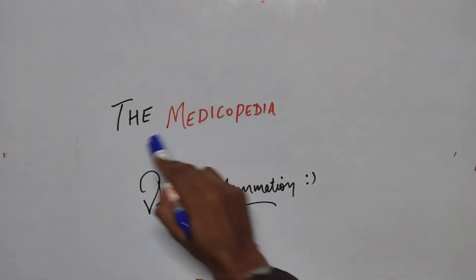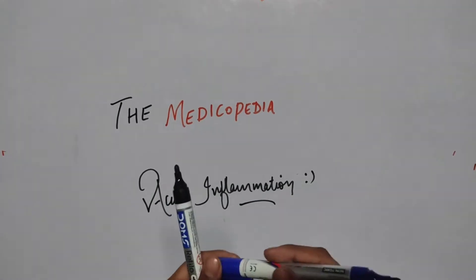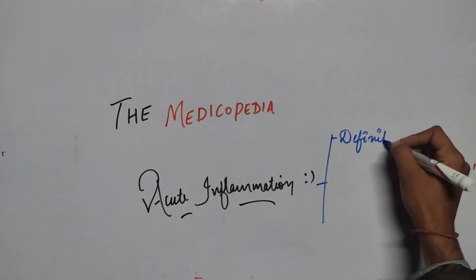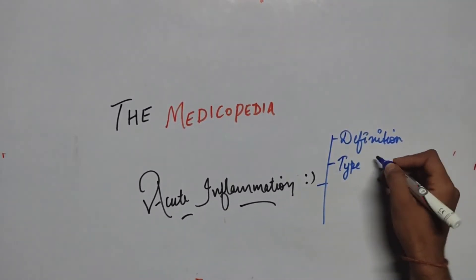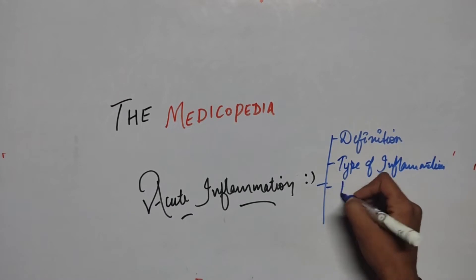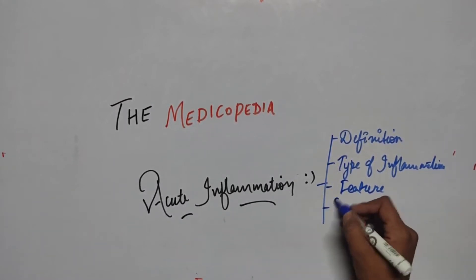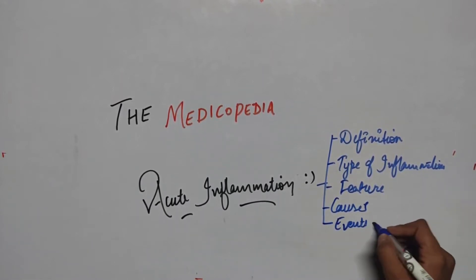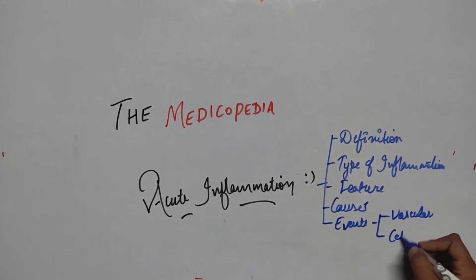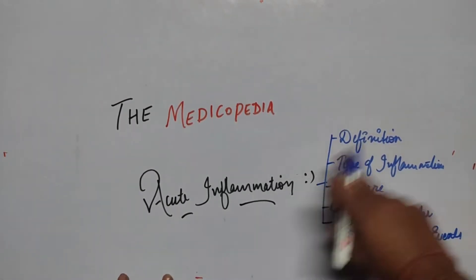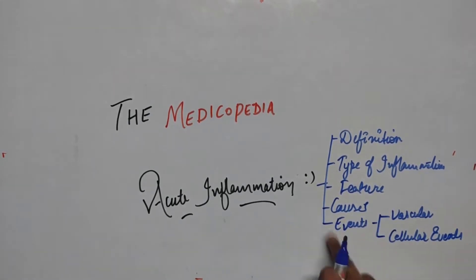Welcome back to Medicopedia. Today we're going to talk about acute inflammation. We'll cover its definition, types of inflammation, features of acute inflammation, causes, and its events — specifically vascular events and cellular events.